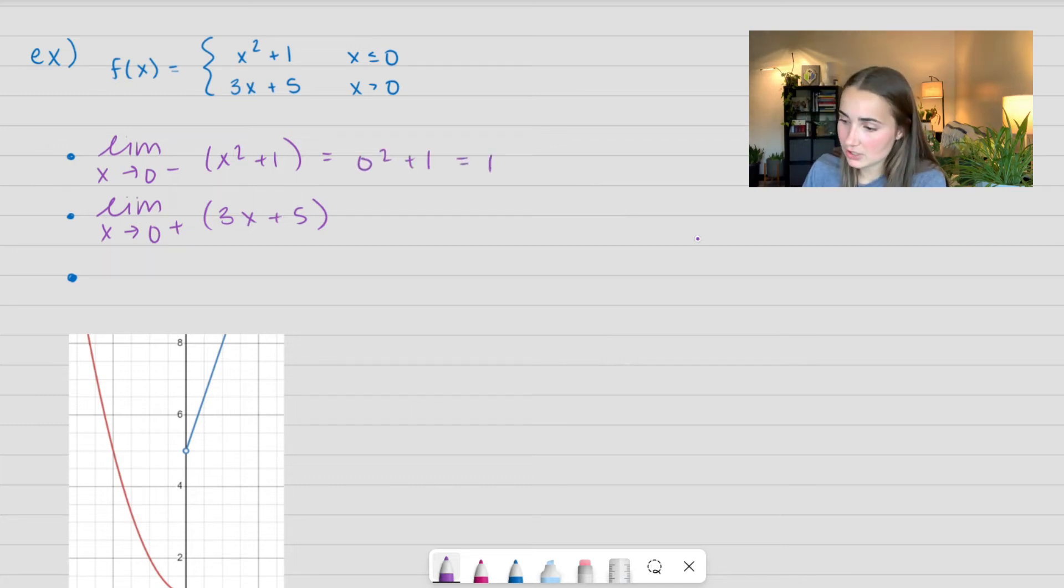My other function, I get 3 times 0 plus 5, which is just equal to 5. So notice here that our f of 0 is equal to 0 squared plus 1, which is equal to 1. But this is only equal to one side of our limits. In order for this function to be continuous, it would have to be that all of these are equal, but that 5 is not equal.